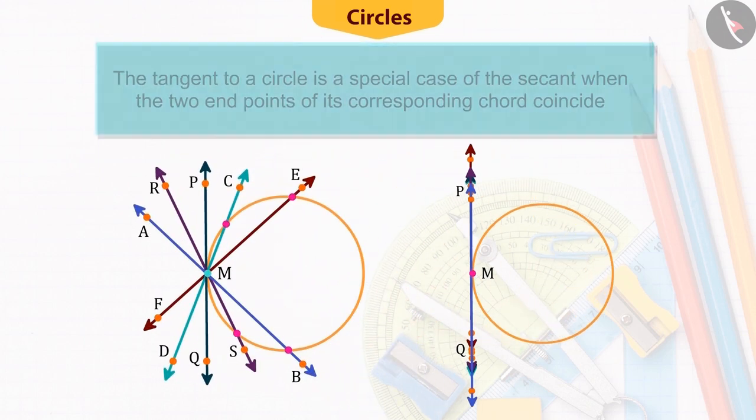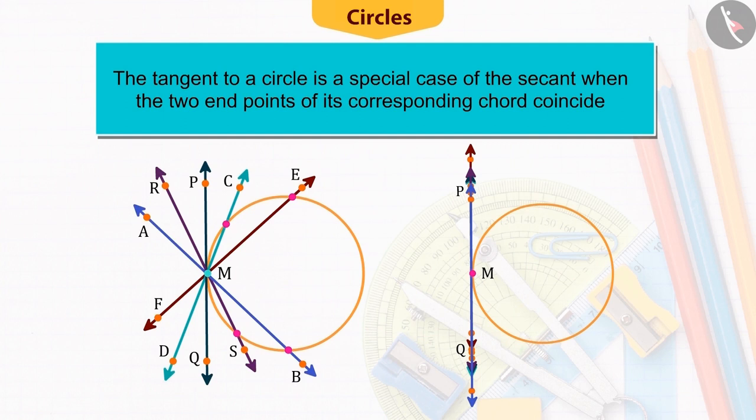With this, we get to know that the tangent to a circle is a special case of the secant when the two end points of its corresponding chord coincide.